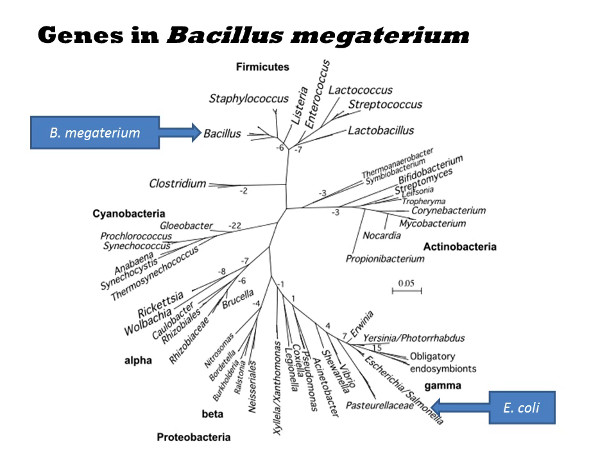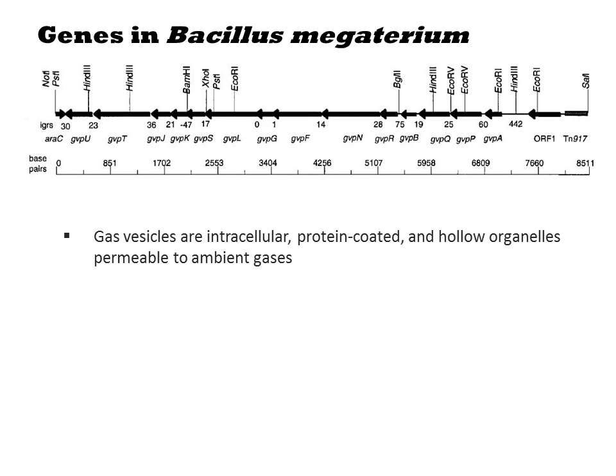When the biochemistry of the cluster is fairly simple and does not involve extensive internal regulation, turning a foreign gene cluster into a microbiological device can be quite easy. Gas vesicles are intracellular, protein-coated, and hollow organelles permeable to ambient gases.